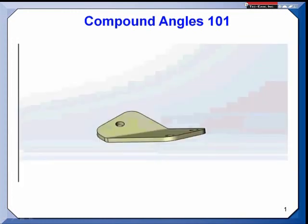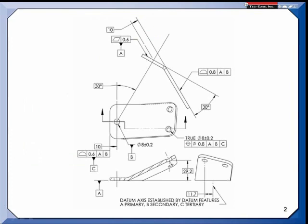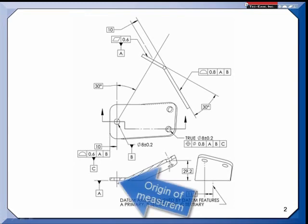I see a lot of people locating holes that are compound angles by locating one point or one end of the hole in space using three dimensions, and we see that on this drawing. First, let's check out our datum features. Here's datum feature A and datum feature B is the hole, and then C stops the rotation, so that gives us our origin right here.